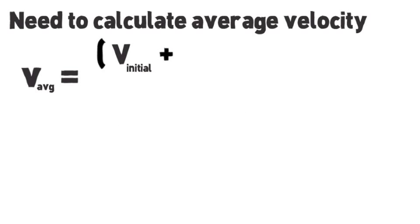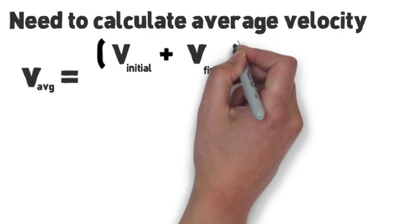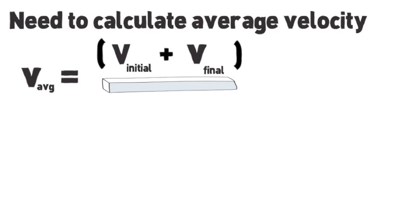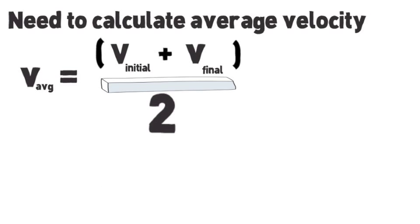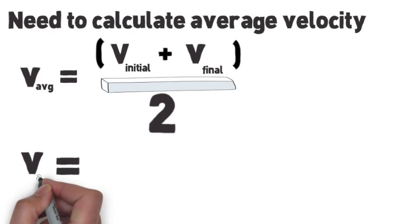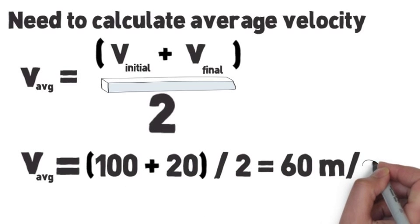To figure this out, we need to find the average velocity. The average velocity I calculated was by taking the sum of the initial velocity and the final velocity, then dividing that sum by 2. If we plug in our numbers, then we have 100 plus 20, which is 120. We divide 120 by 2, and we get 60, which we now know 60 meters per second is our average velocity.